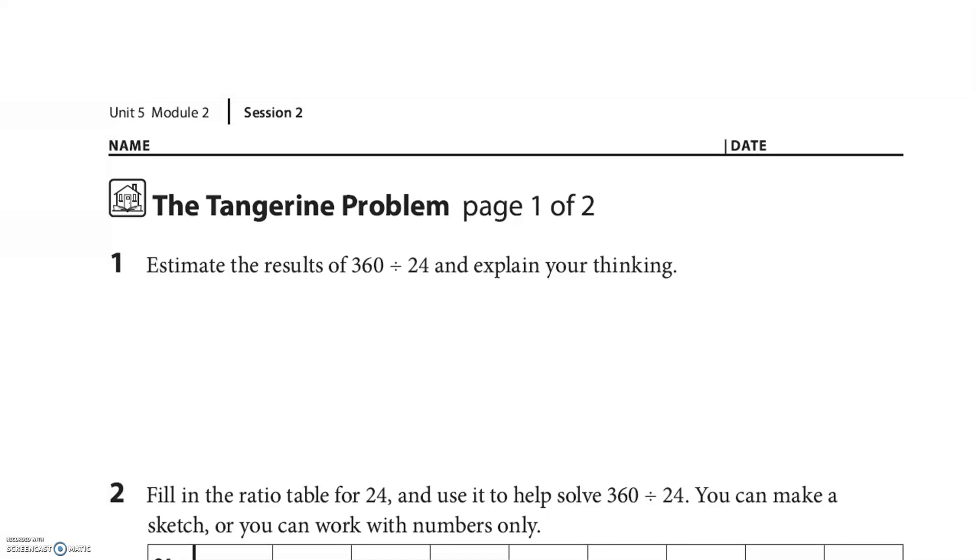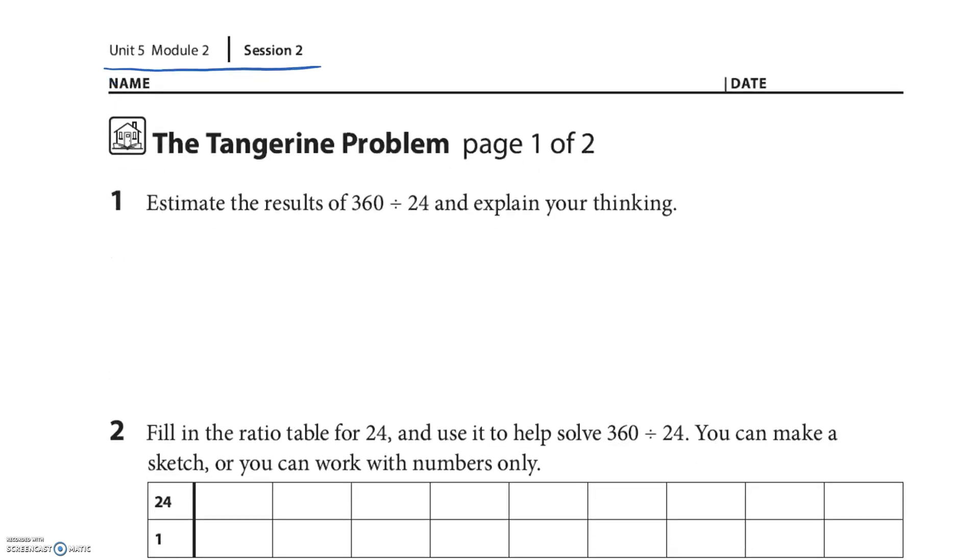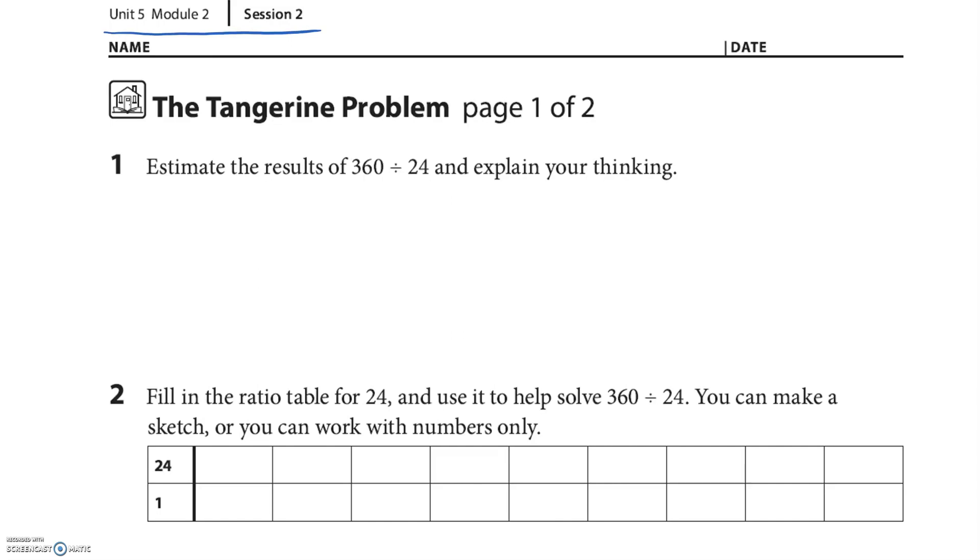Hey everyone, so this is Unit 5 Module 2 Session 2 homework. I want to try and do all of these. Let's see how we do. This first one they want to estimate, and this is sometimes hard for us. We want to find the exact answer. Let's see what I can do. When I estimate, I look at just what 24 times 10 is, and that's 240 right?